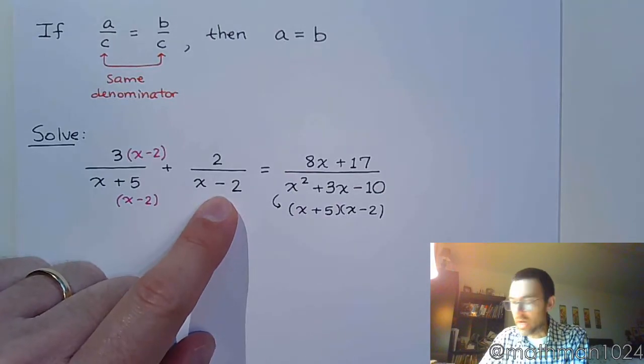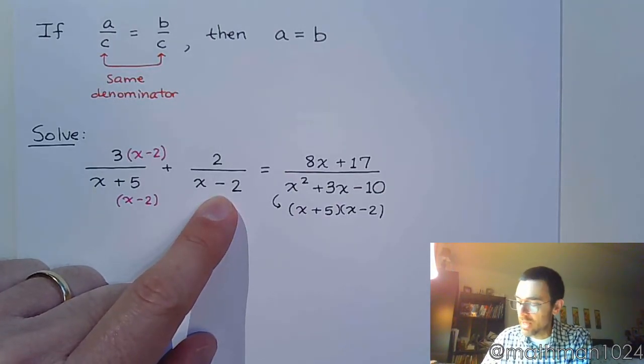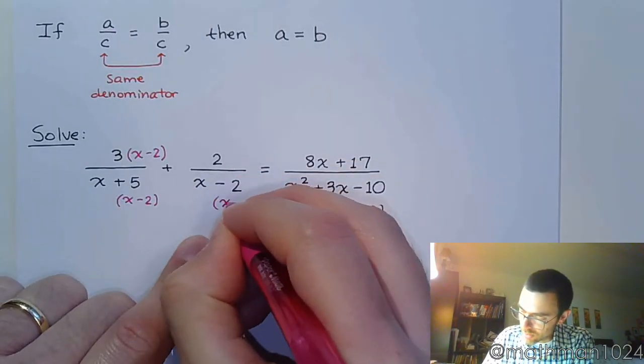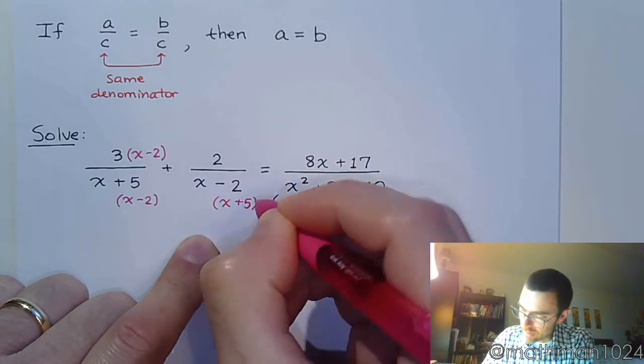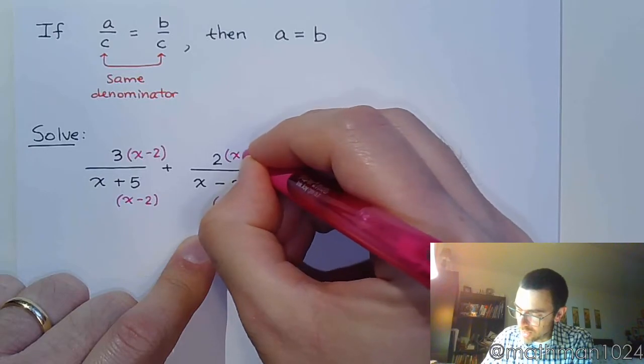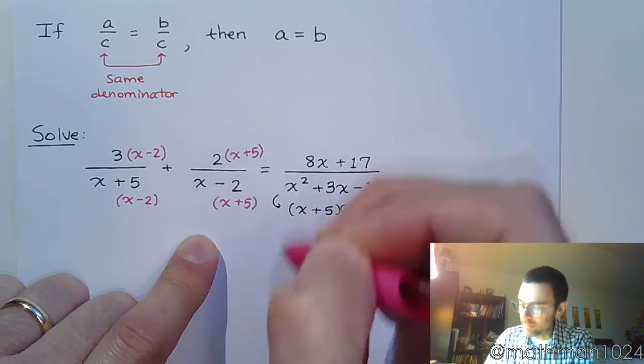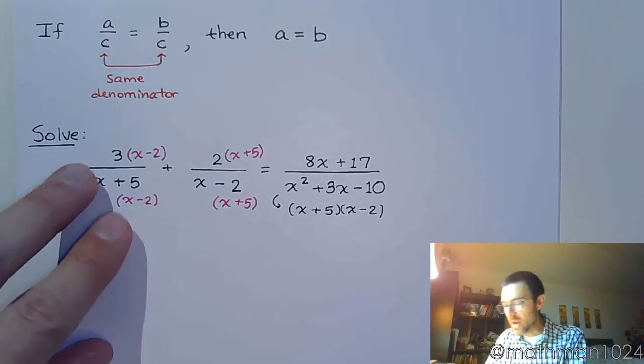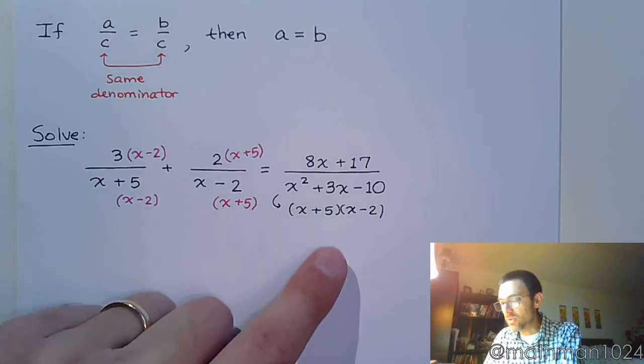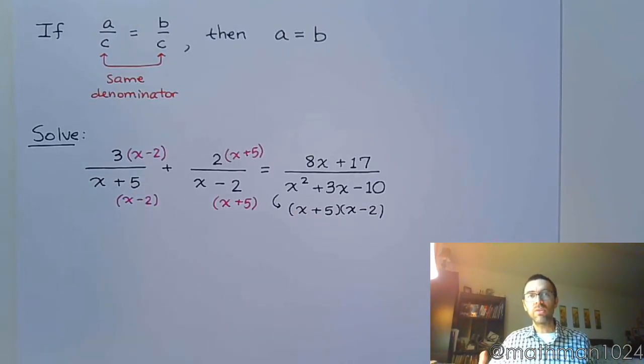Now here, this middle guy, x minus 2 is missing a factor that the others have, and that's the factor x plus 5. And again, you have to make sure that you put that in the numerator. So we can see that everybody has the exact same factors comprising their denominators.